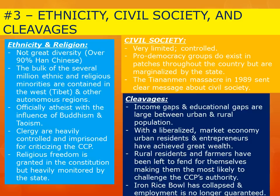In terms of cleavages, there have been great income gaps and educational gaps divided between urban and rural residents as a result of economic growth. With a more liberalized market economy, some have found it easier to achieve great wealth, particularly urban residents and entrepreneurs, while people in rural areas and farmers have been left behind. Full employment is no longer guaranteed as it was during the Mao era, and because of this, rural residents and farmers are the most likely group to try to stand up to the CCP.